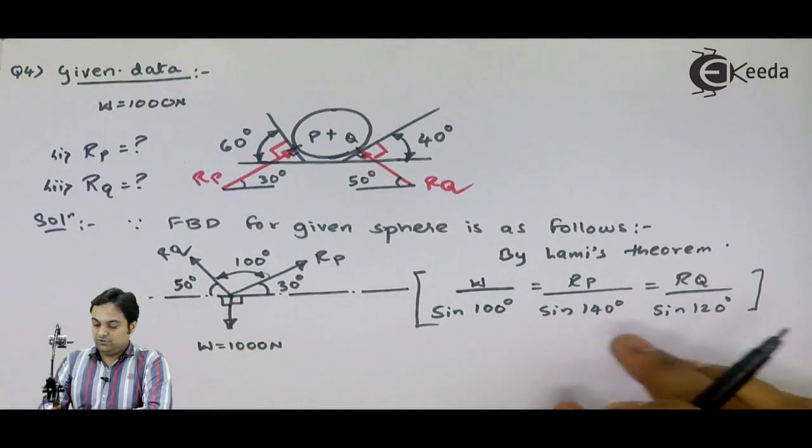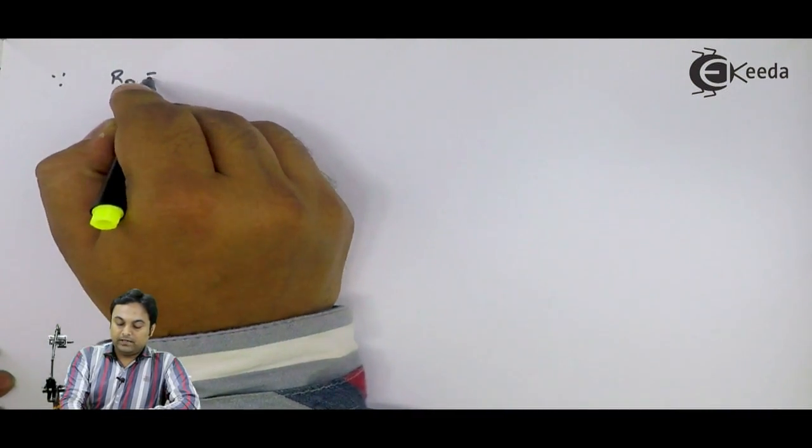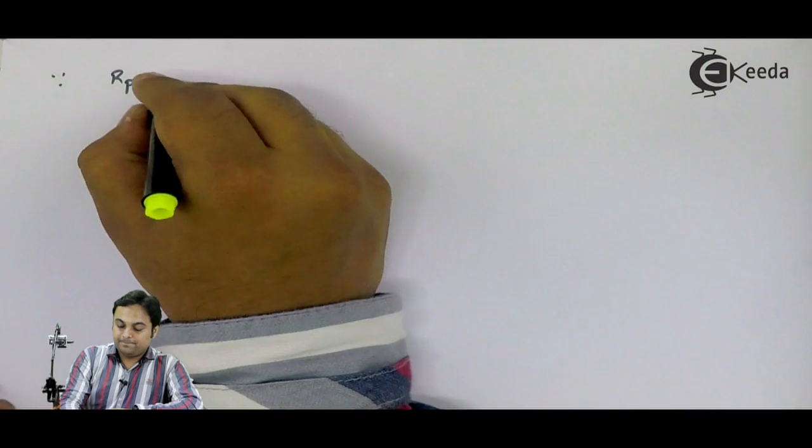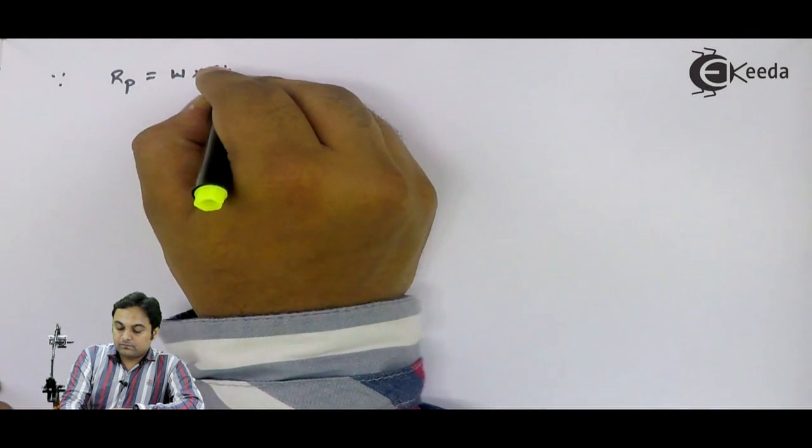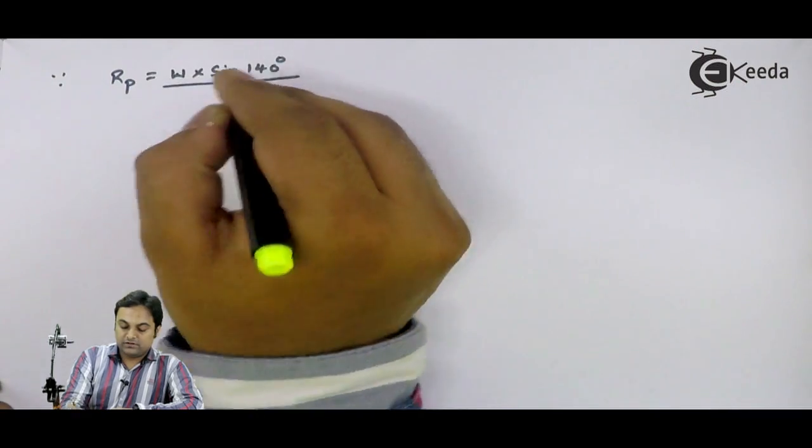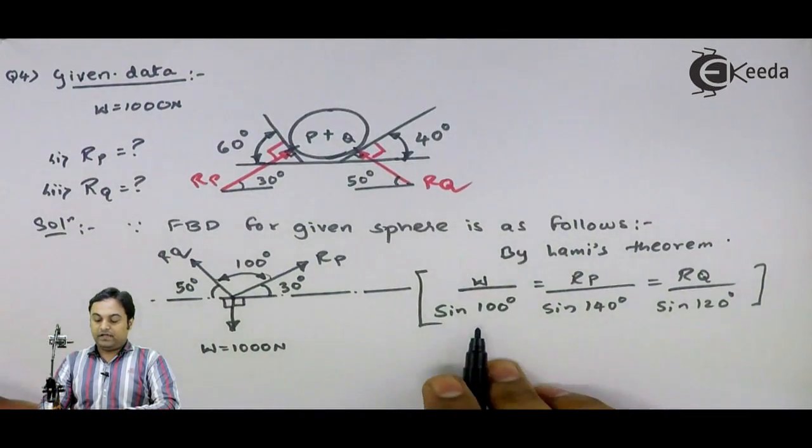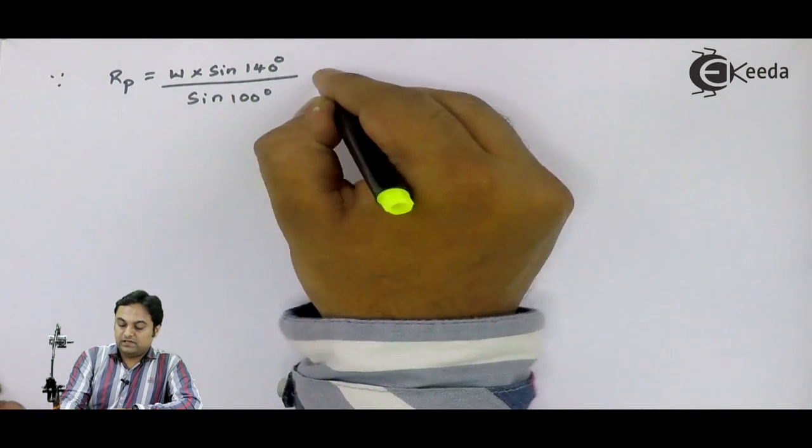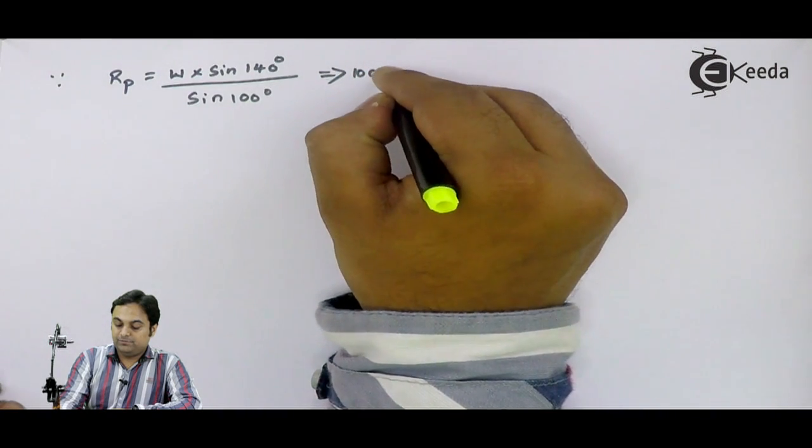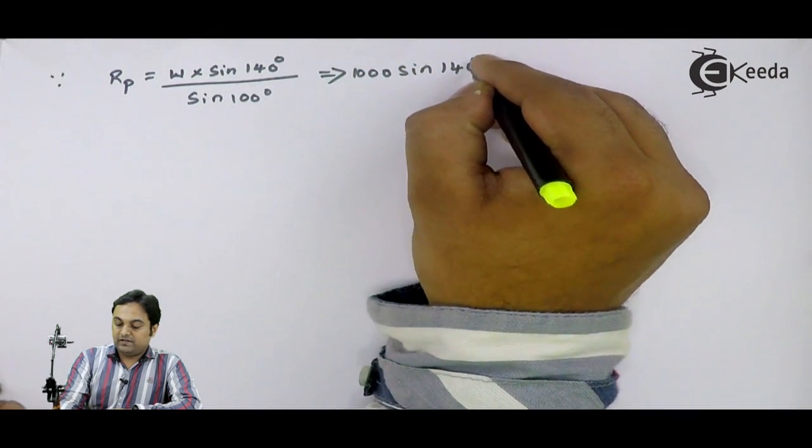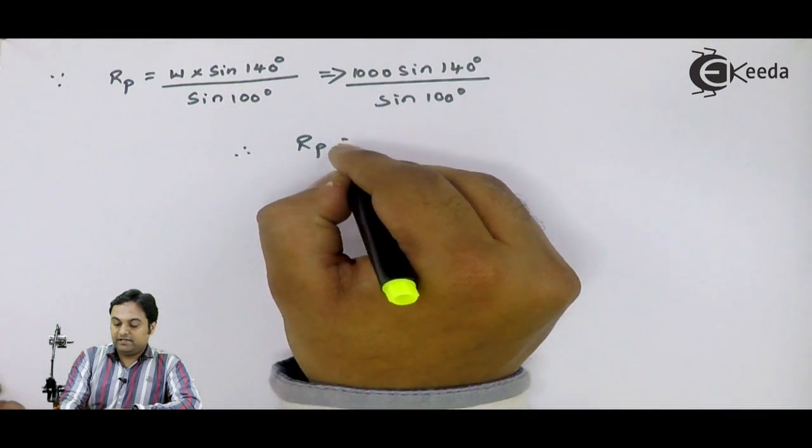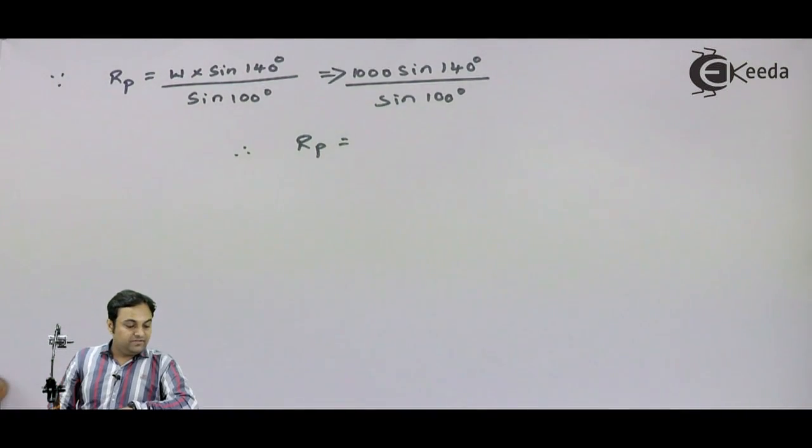I can use this equation to calculate RP and RQ. First for RP: RP is equal to W times sine 140 divided by sine 100, that's equal to 1000 times sine 140 divided by sine 100 degrees. If I calculate reaction at P, my answer comes out to be 652.7 Newton.